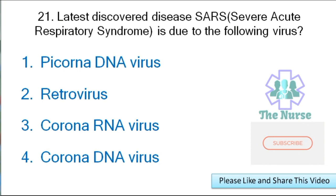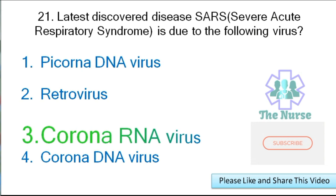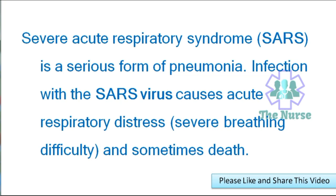Next question: SARS, i.e. severe acute respiratory syndrome, is due to — Picorna DNA virus, retrovirus, Corona RNA virus, or Corona DNA virus? Correct answer is Corona RNA virus. SARS is a serious form of pneumonia. Infection with the SARS virus causes acute respiratory distress and severe breathing difficulty, and sometimes it will cause death.